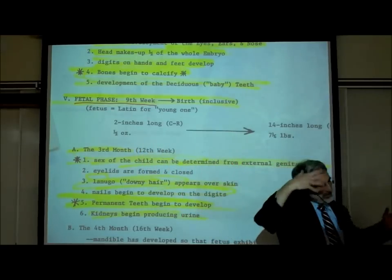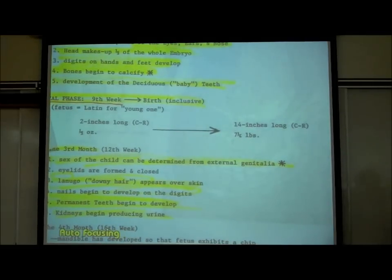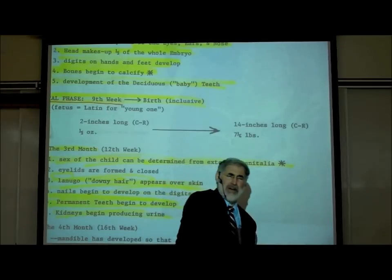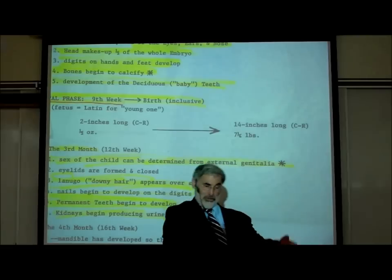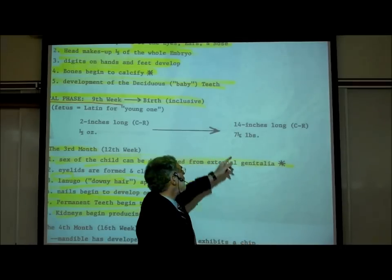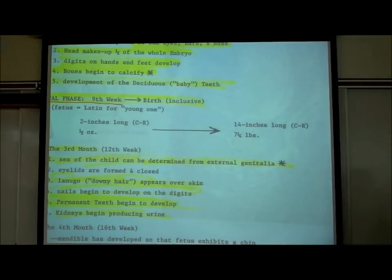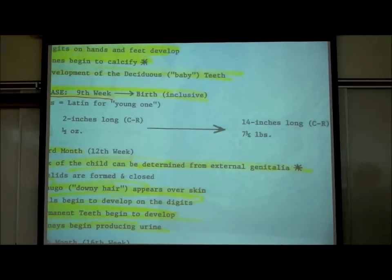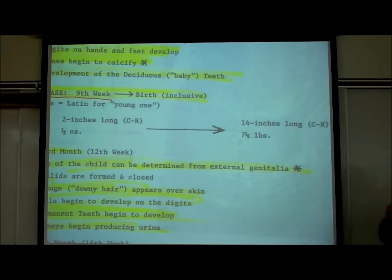After a baby is born, they measure it from head to toe — stretched out. In the womb they can only measure crown to rump, which is 14 inches at full term. At nine months full term it weighs about seven and a quarter pounds — though with better nutrition today, most babies are closer to eight pounds. Babies are getting bigger with each generation, presumably because of nutrition.